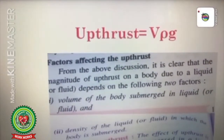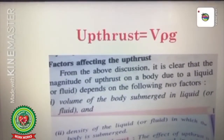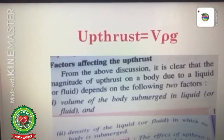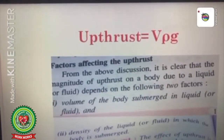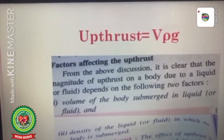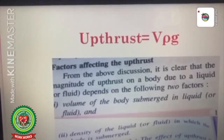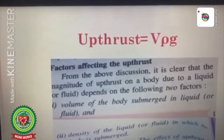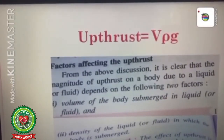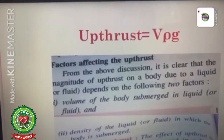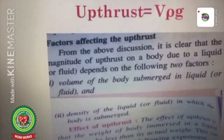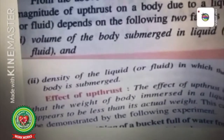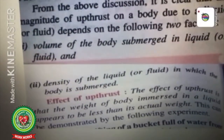Our next topic is factors affecting upthrust. The formula for upthrust is: upthrust = V·ρ·g, where V is the volume of the body submerged in the liquid, ρ is the density of the liquid, and g is acceleration due to gravity. At a particular place, g acts as a constant with a value of 9.8 m/s² on the surface of the earth. Since g is constant, we are left with two factors: first, the volume of the body submerged in the liquid or fluid; and second, the density of the liquid in which the body is submerged.